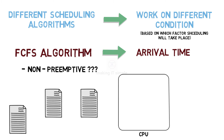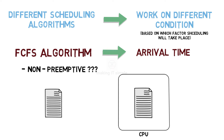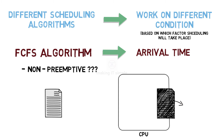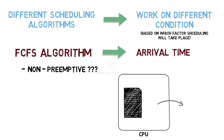Non-preemptive means that once a process starts getting executed by the CPU, it will not be taken out until it gets completely executed. So once the process completes execution, only then can other processes be sent for CPU execution.